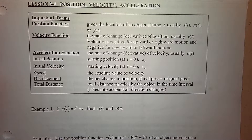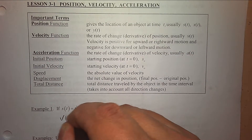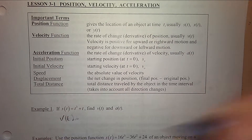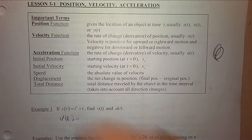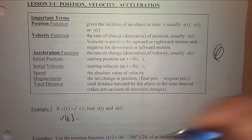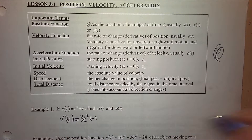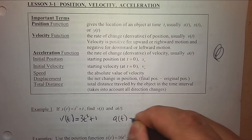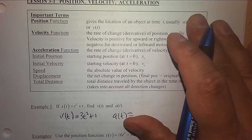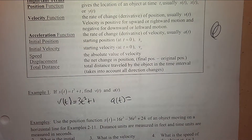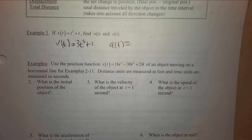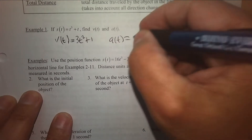Example one: s(t) equals that — that means it is a position function. It says find the velocity and find the acceleration. How would I find the velocity? Take the derivative: 3t² + 1. How would I find the acceleration? Take the derivative of the velocity. Can't be that simple, right?